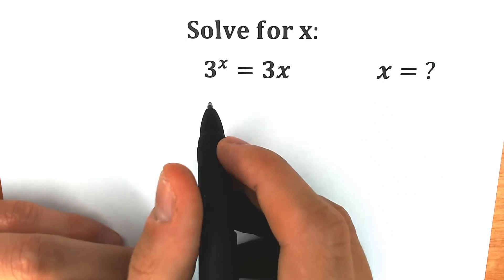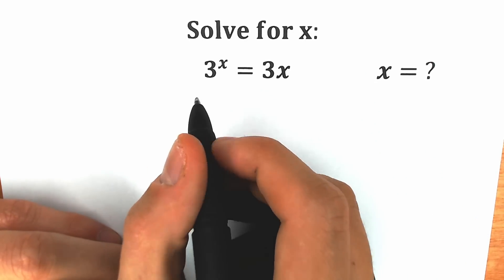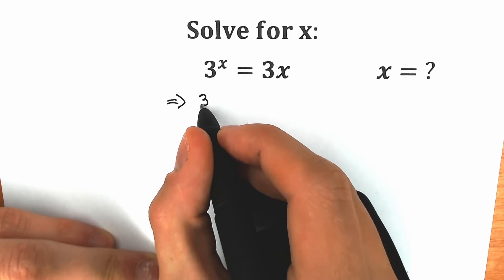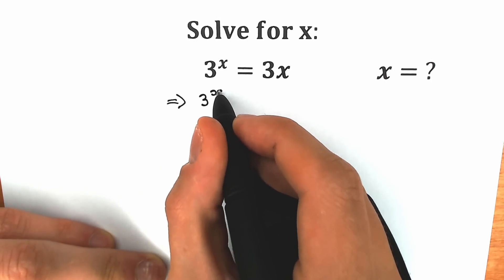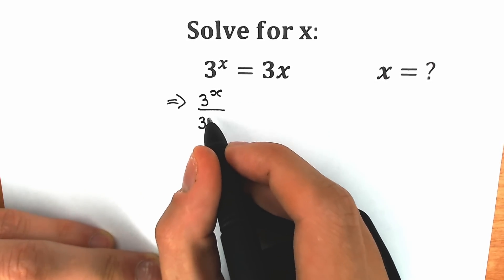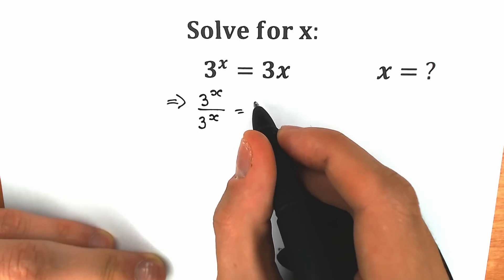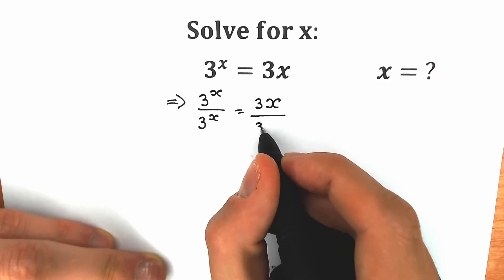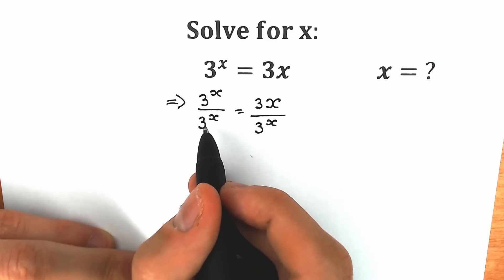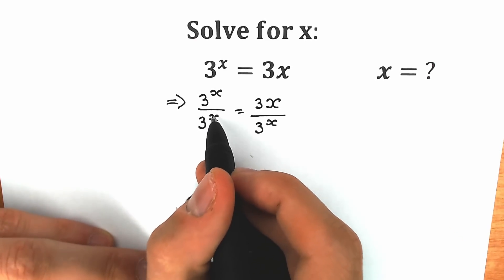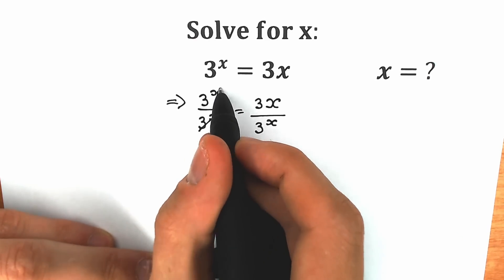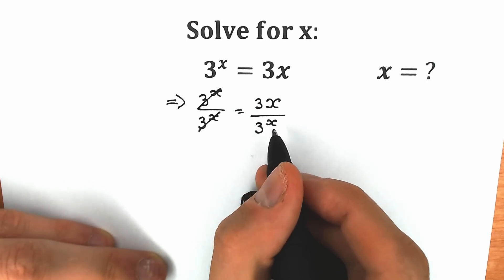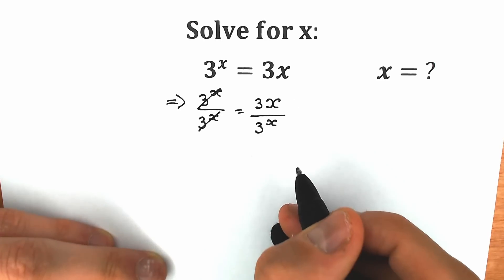First of all, let's divide both sides by 3 to the power x. When we divide our left side by 3 to the x, we have 3 to the x divided by 3 to the x, which equals 3x divided by 3 to the power x. On the left side we have 1, because the numerator and denominator cancel, and on the right side let's bring 3 to the power x to our numerator.